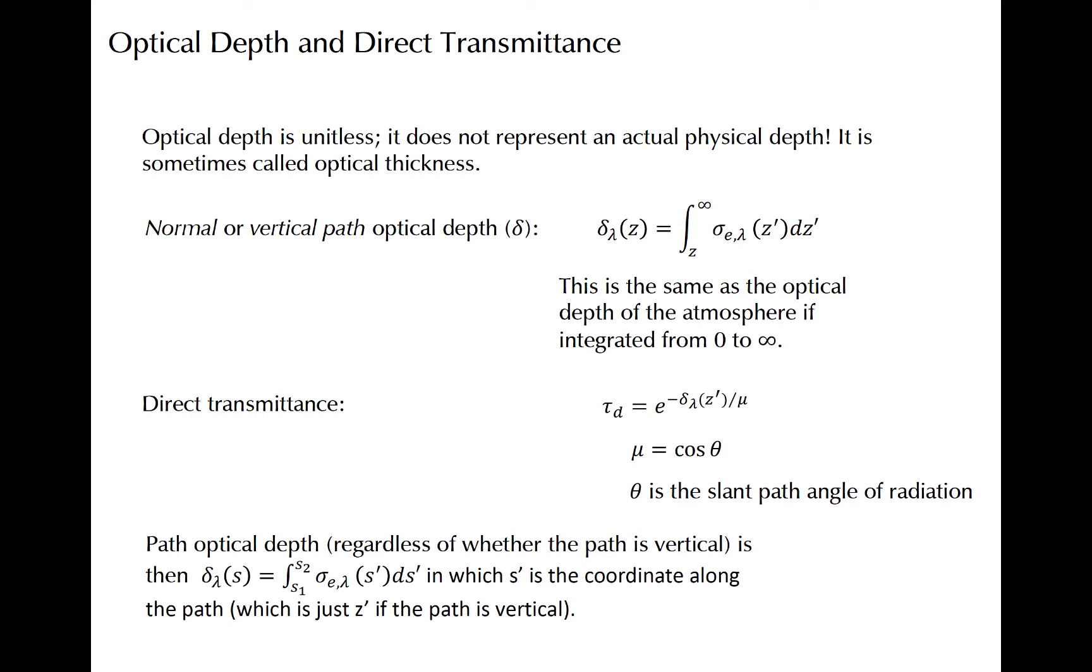The mathematical definition is the integral of the volume extinction coefficient integrated over some path. We will use small delta to denote optical thickness. What is displayed here is the vertical path optical depth, which describes the optical depth along a perfectly vertical path. If we integrate this from zero to the top of the atmosphere, we compute the optical depth of the atmosphere.